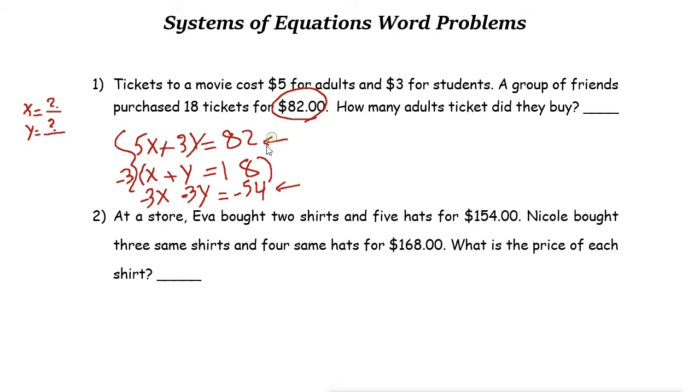Now add the two equations. The result is 5X plus negative 3X is just 2X. 3Y minus 3Y is just 0, so it equals 82 plus negative 54, which is 28. So 82 minus 54 is 28. Now we have 2X equals 28. Divide both sides by 2, and X is 14.